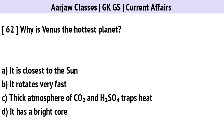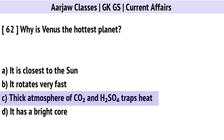Why is Venus the hottest planet? Correct option is C: Its thick atmosphere of CO2 and H2SO4 traps heat.